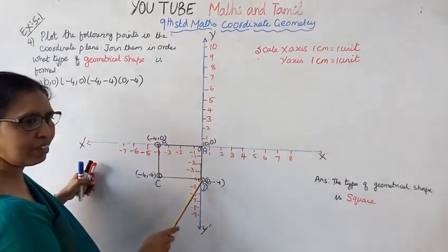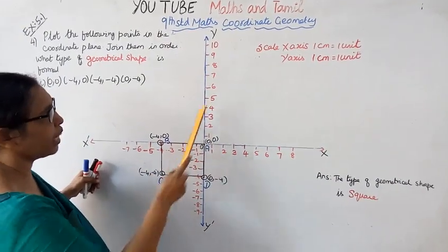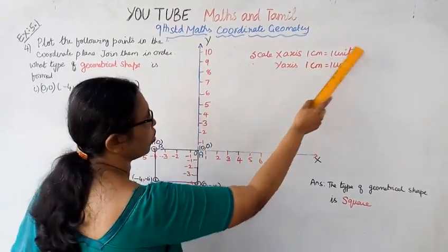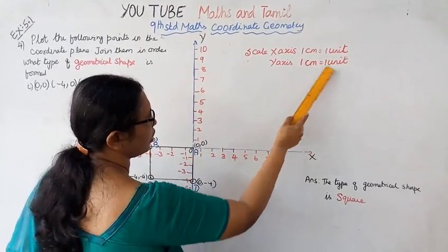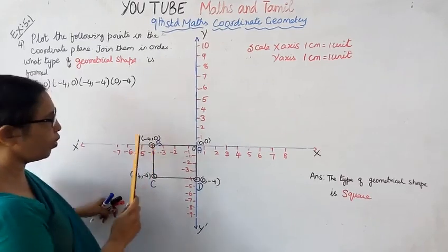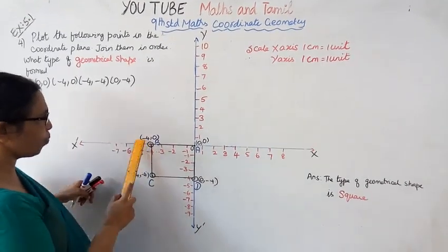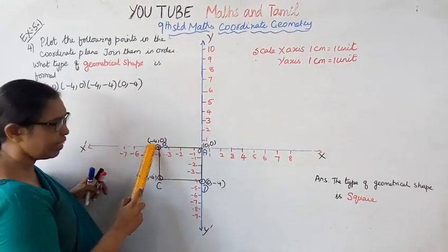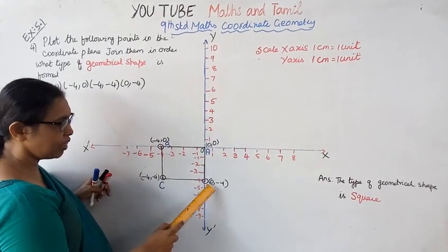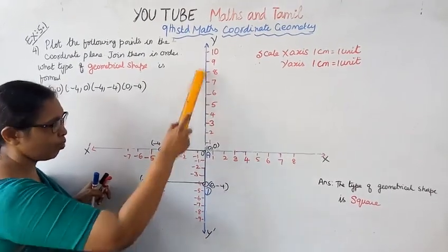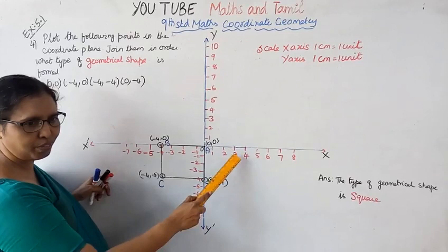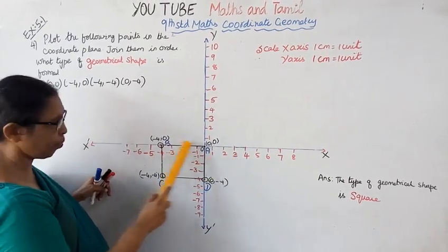You have to plot with scale. X-axis: 1cm equals 1 unit. Y-axis: 1cm equals 1 unit. This is the point (-4,0) on X-axis, (0,-4) on Y-axis.